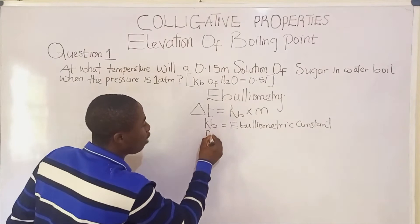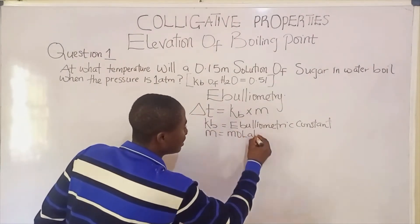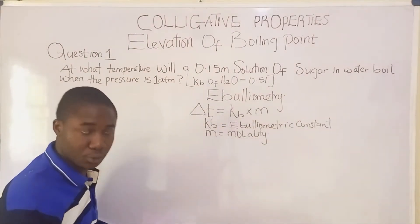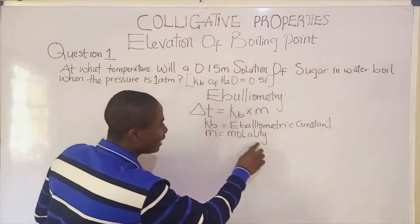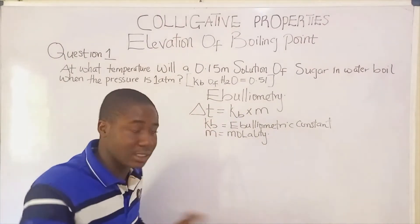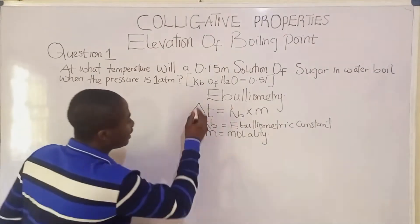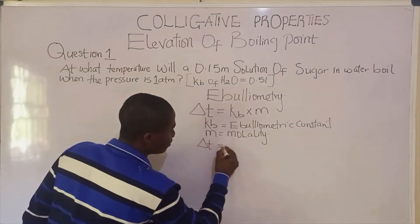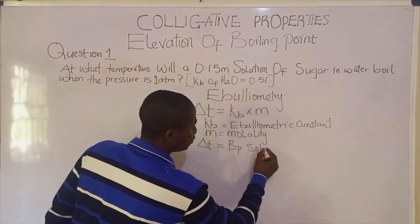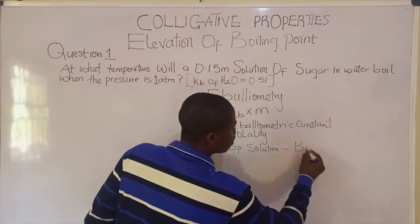The small m is basically called molality, and molality is a concentration unit. Delta T is defined as the boiling point of the solution minus the boiling point of the solvent.